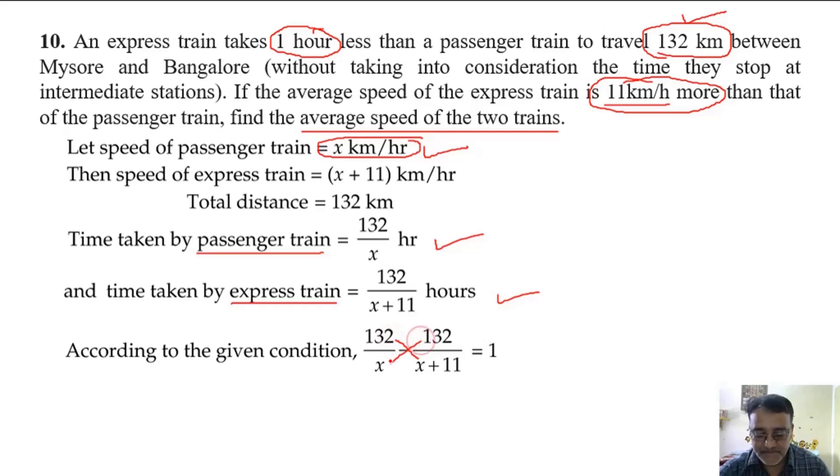Now take LCM. If you take LCM, you will get 132x plus 1452 minus 132x upon x into x plus 11 equals 1. Now cross multiplication. So we will get x square plus 11x equals 1452. Now shift this to this side. So we will get finally the quadratic equation.